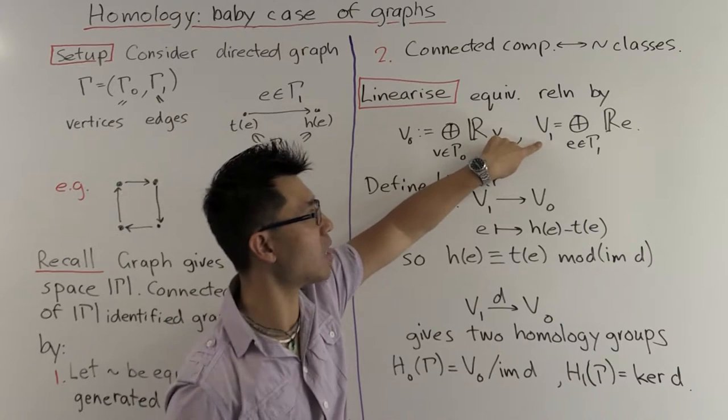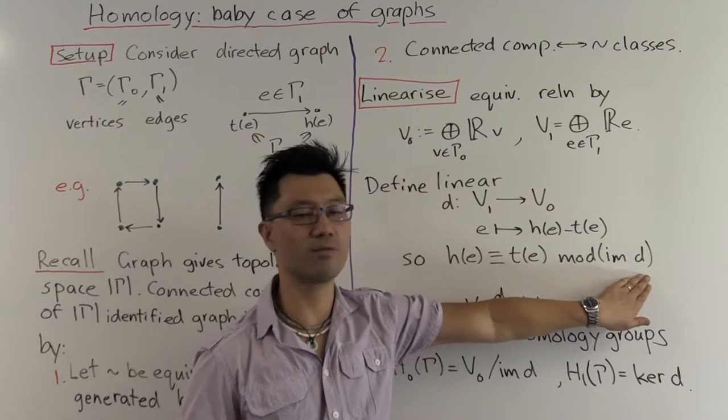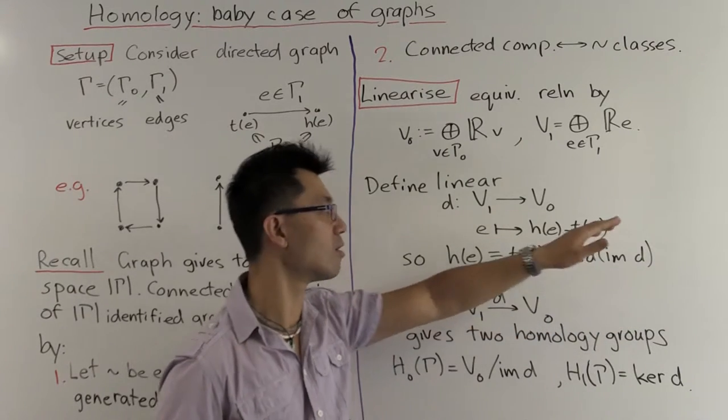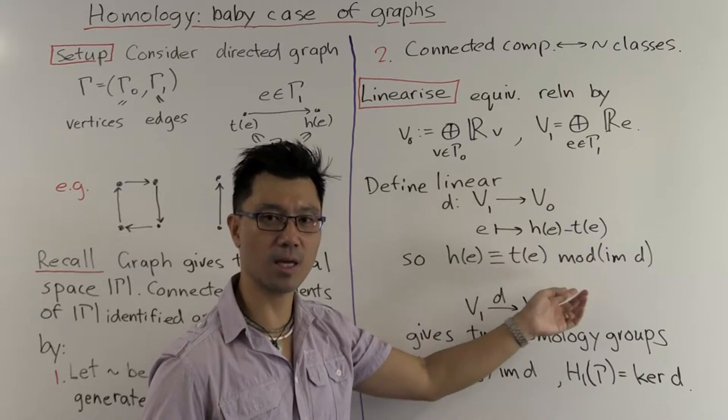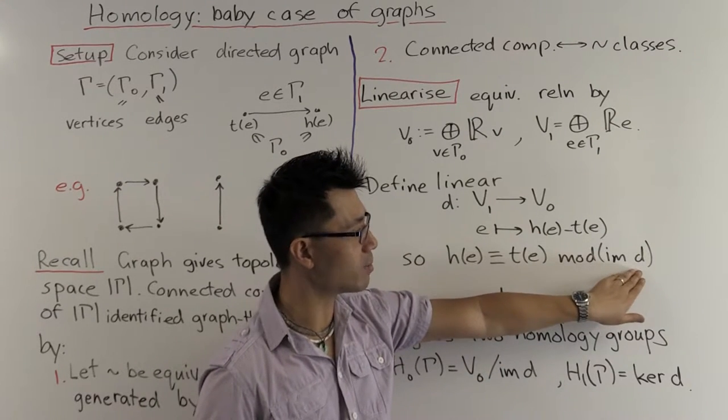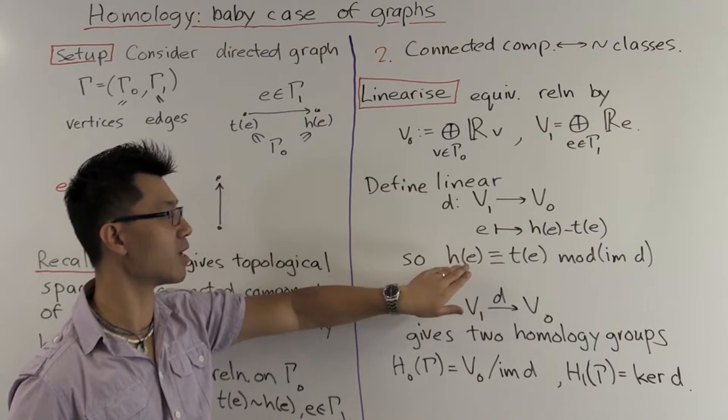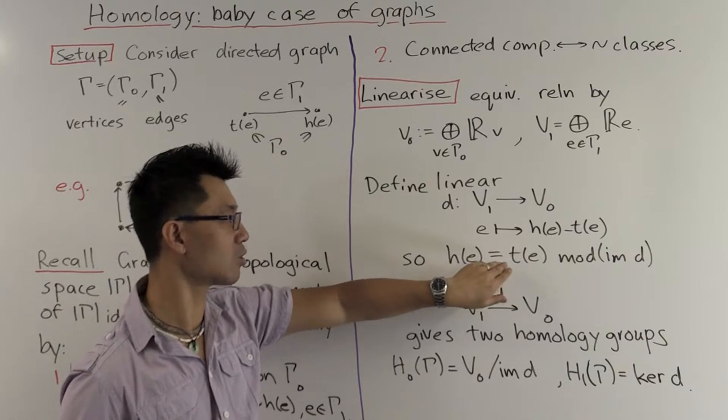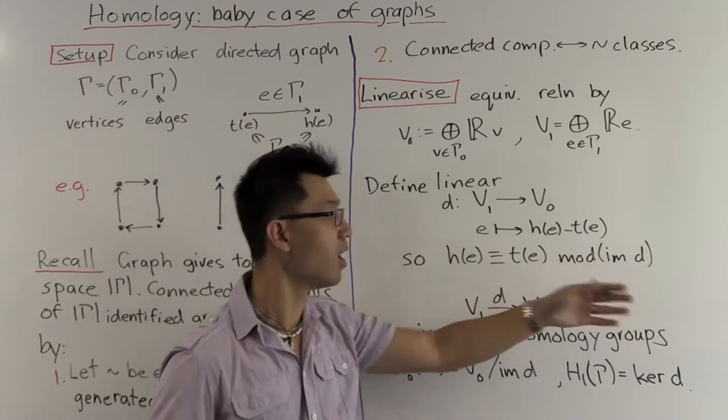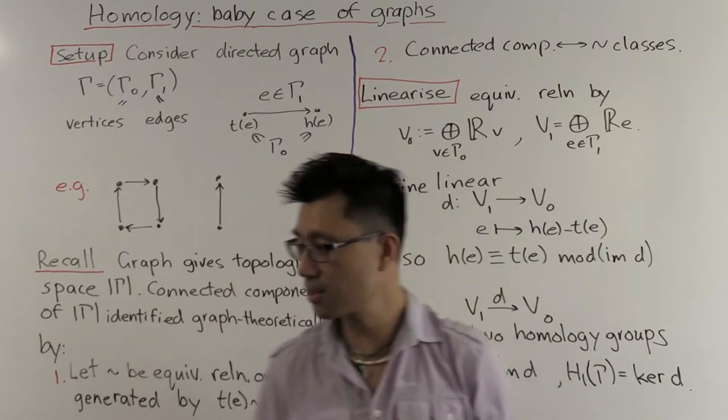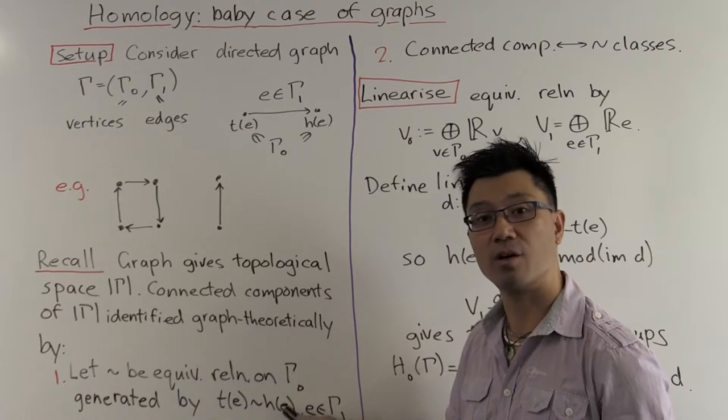So what we'll do is look at the linear map, which sends an edge E, that's a basis element inside your V1, to H of E minus T of E. So the image of D is just the subspace of V0 generated by these elements here. And modulo this image of D. Of course, this is 0, which just tells you that the head of E is congruent to the tail of E, modulo the image of D. And this completely reflects the fact that the tail of E is equivalent to the head of E here.